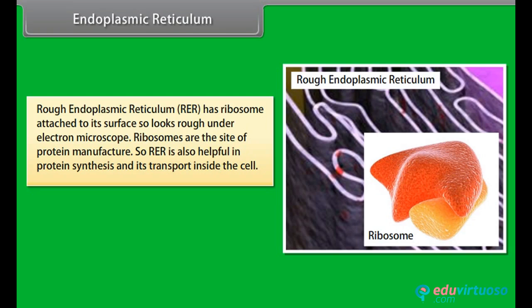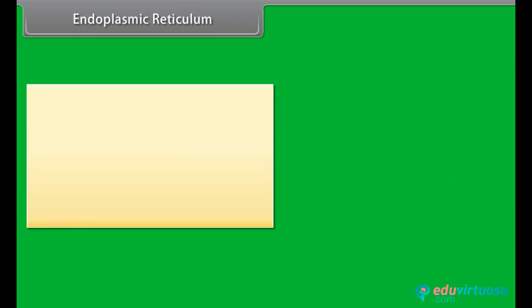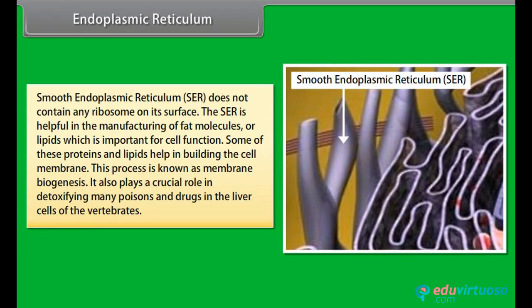Ribosomes are the site of protein manufacture, so RER is also helpful in protein synthesis and its transport inside the cell. Smooth endoplasmic reticulum (SER) does not contain any ribosomes on its surface. The SER is helpful in the manufacturing of fat molecules or lipids, which are important for cell function. Some of these proteins and lipids help in building the cell membrane — this process is known as membrane biogenesis.